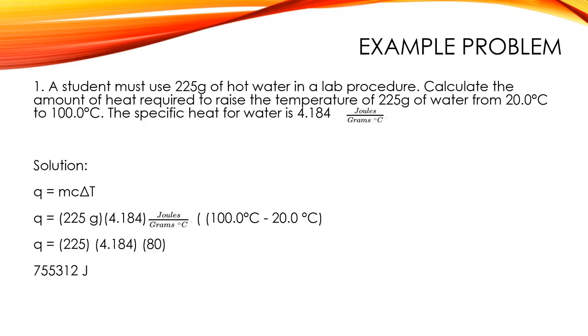Alright, so let's do an example here. A student must use 225 grams of hot water in a lab procedure. Calculate the amount of heat required to raise the temperature of 225 grams of water from 20 degrees Celsius to 100 degrees Celsius. The specific heat for water is 4.184 joules per gram degree Celsius. Start with the equation, Q equals MC delta T. You're going to plug in M is 225. The C is the heat capacity, that's 4.184. You're always going to be given C. And the change in temperature is we're going from 20 degrees to 100 degrees. You always subtract. You always go final minus initial. So 100 is where I want to end up with, 20 is where I started at. So 100 minus 20 is 80. And you're just going to plug that into your calculator. 225 times 4.184 times 80. And you're going to get 755,312 joules from that.